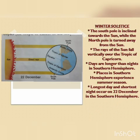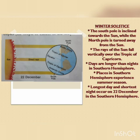The winter solstice occurs on 22nd December. During this time, the south pole is inclined toward the sun while the north pole is away — the opposite of summer solstice. The rays fall on the Tropic of Capricorn, so a large portion of the southern hemisphere receives heat and light. Days are longer than nights in the southern hemisphere, which experiences summer season. 22nd December has the longest day and shortest night in the southern hemisphere.